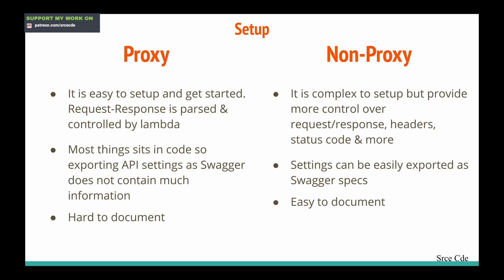Within custom integration, it is of course complex to set up, but it provides more control over the request and response data, along with headers, status code, and more. Within non-proxy integration we need knowledge of VTL and need to configure mapping templates, response codes, response headers, and transformations if required. As part of the custom integration, settings can be easily exported as Swagger specs and it is easy to document.